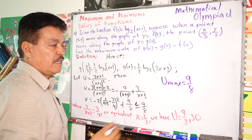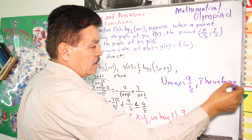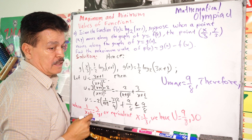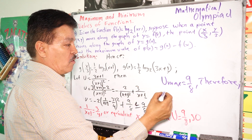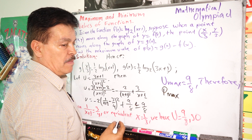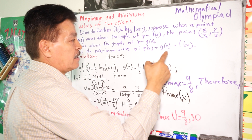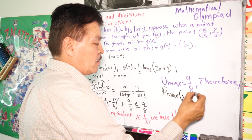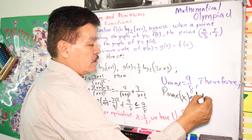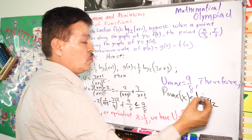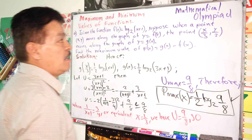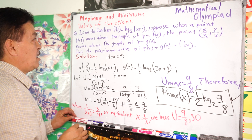Therefore, the maximum value of p(x) = g(x) - f(x) is P_max = ½ · log₂(9/8). This is our conclusion for this maximum and minimum values problem.